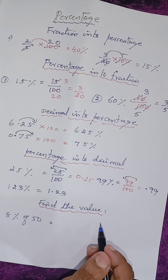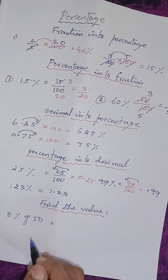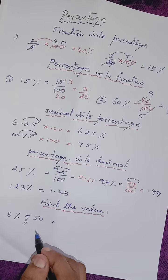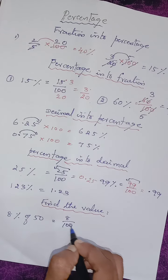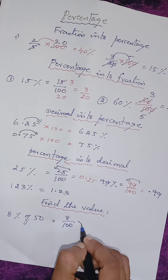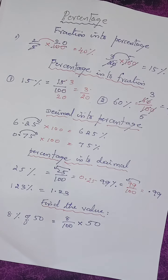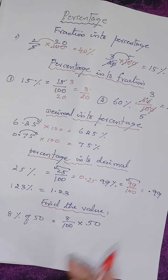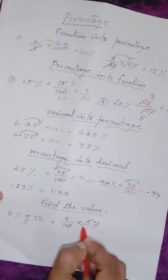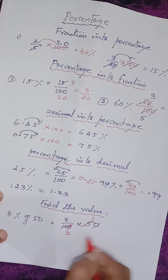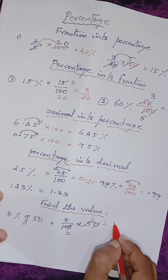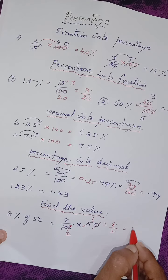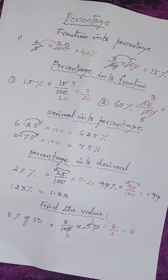Now let us see how to find the value of a percentage. The question is 8 percentage of 50. 8 percentage means we write 8 by 100. 'Of' means multiply, so multiply by 50. Then cancel 50 and 100 — the zeros cancel, and 5 goes into 10 twice. So we will be getting 8 by 2. 8 by 2 is 4. So the value is 4.